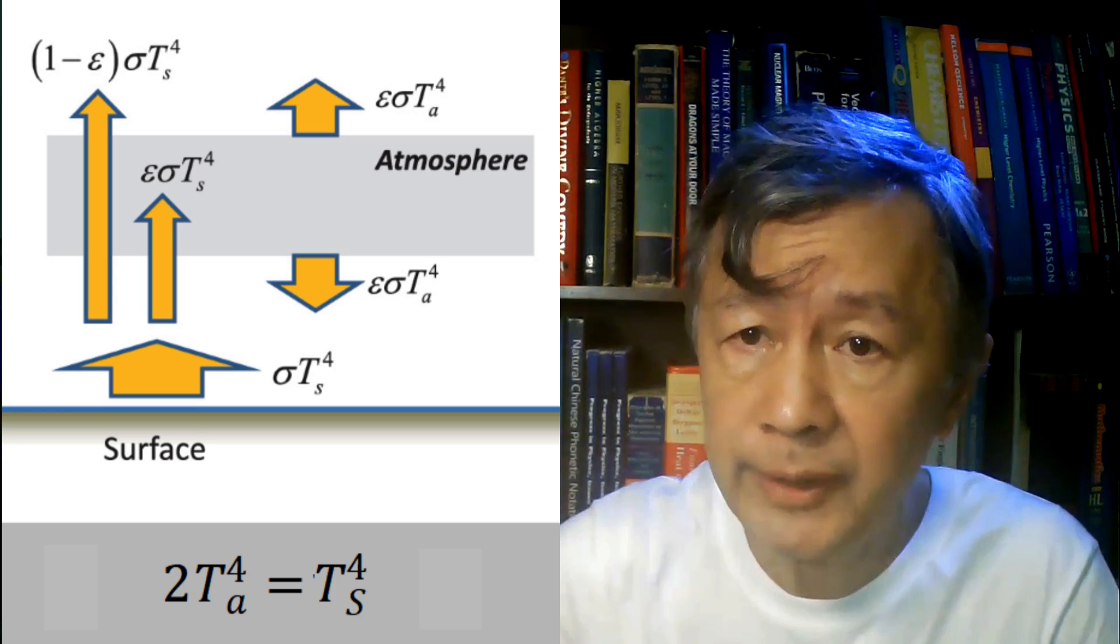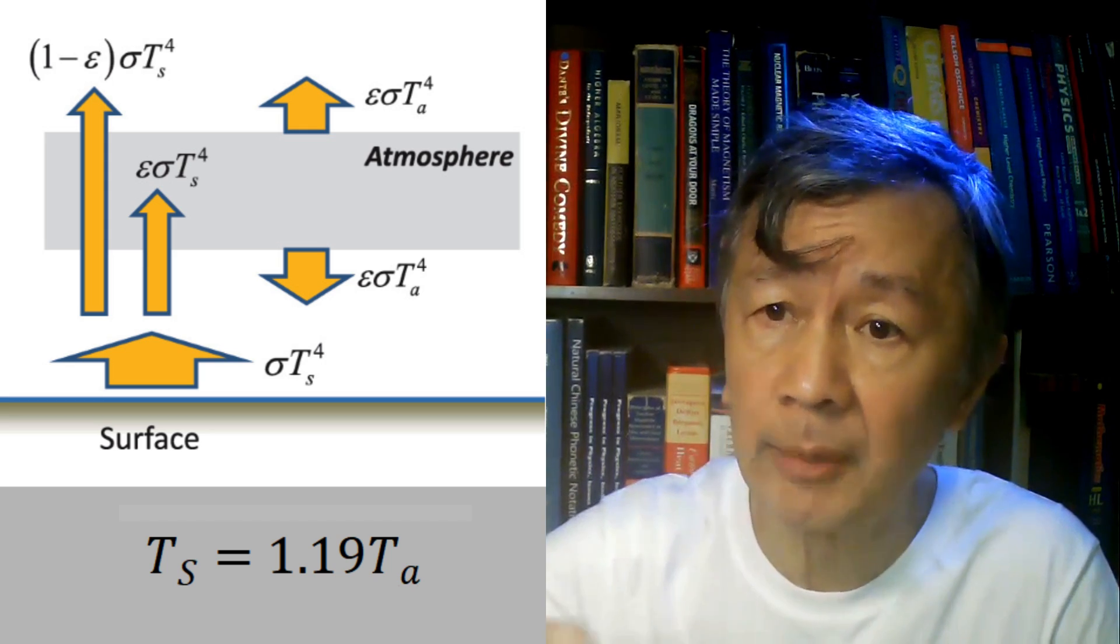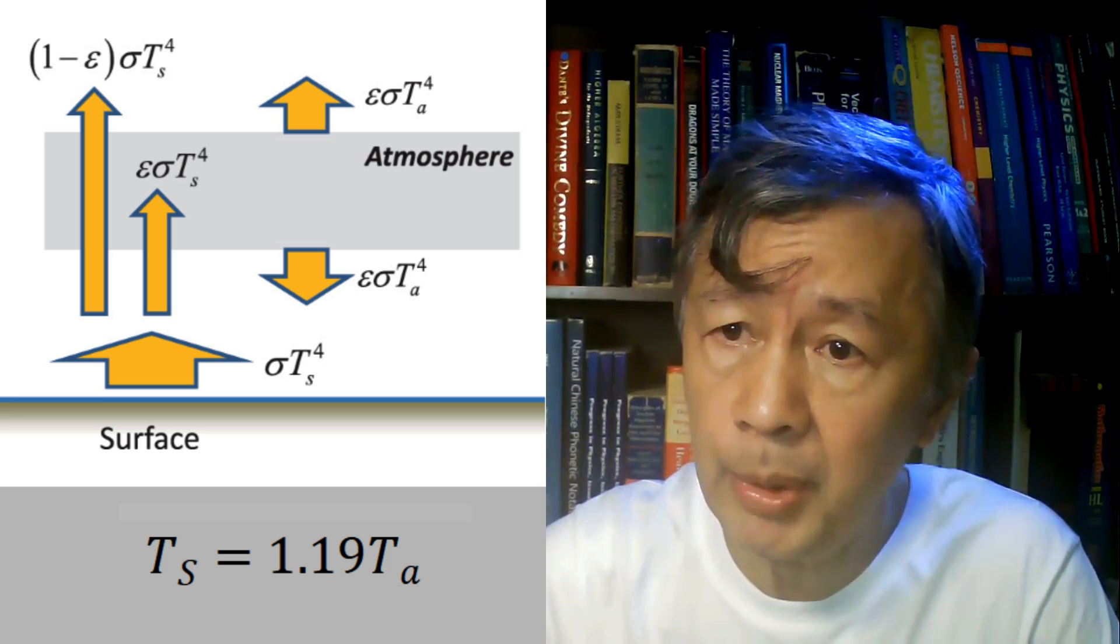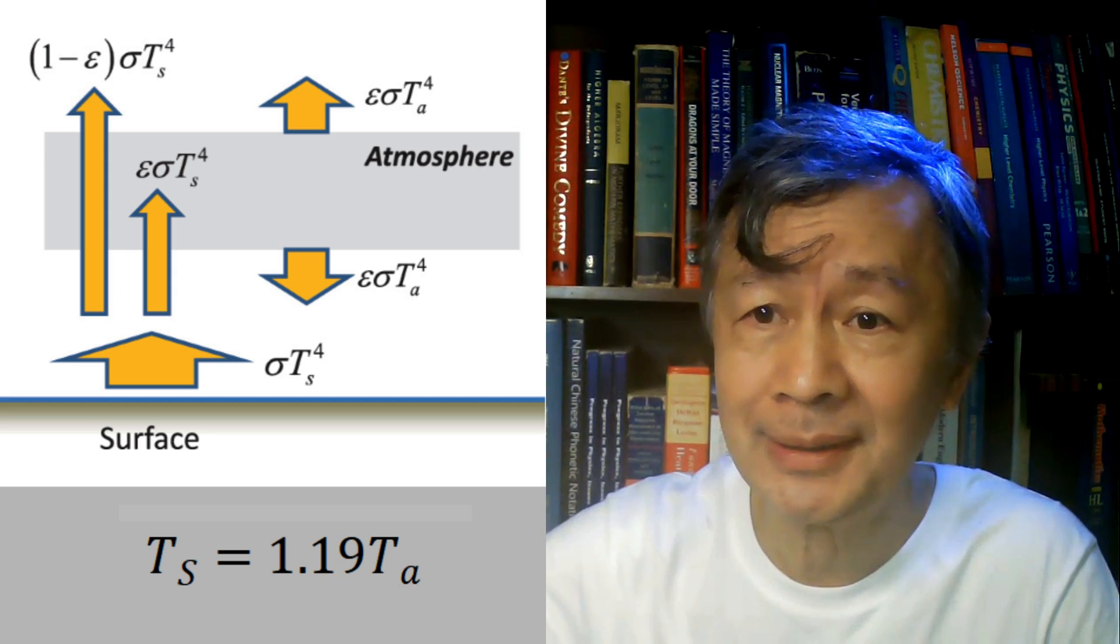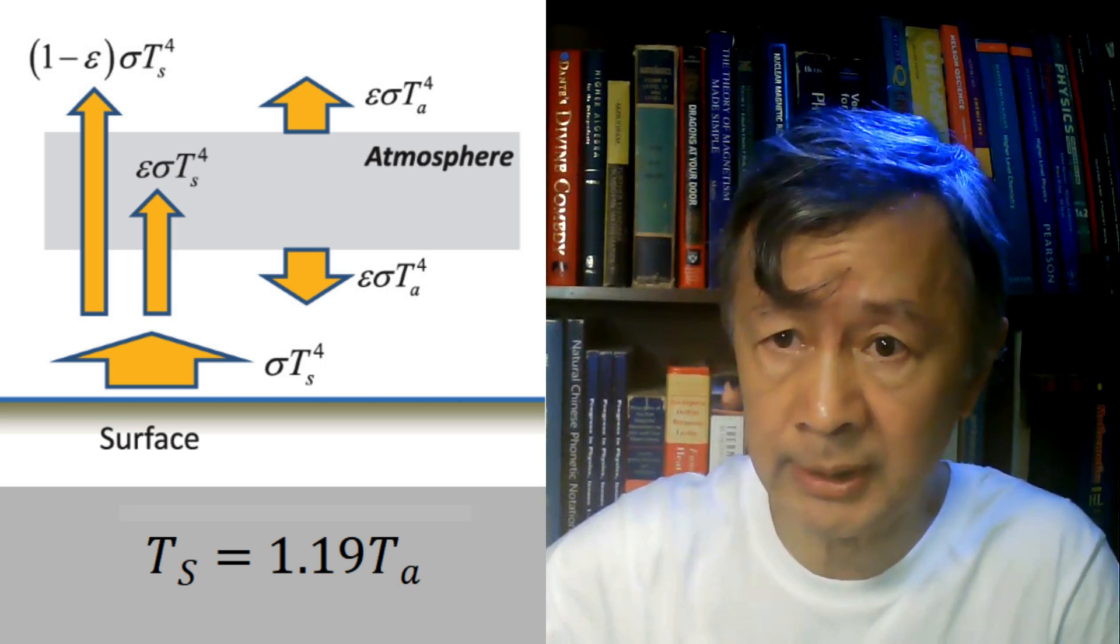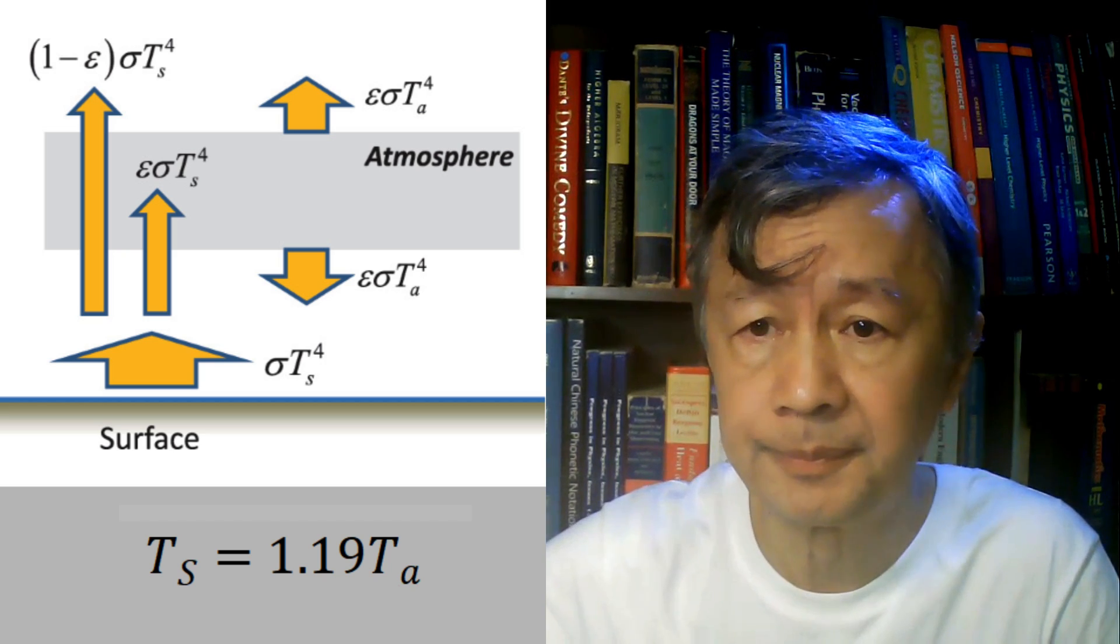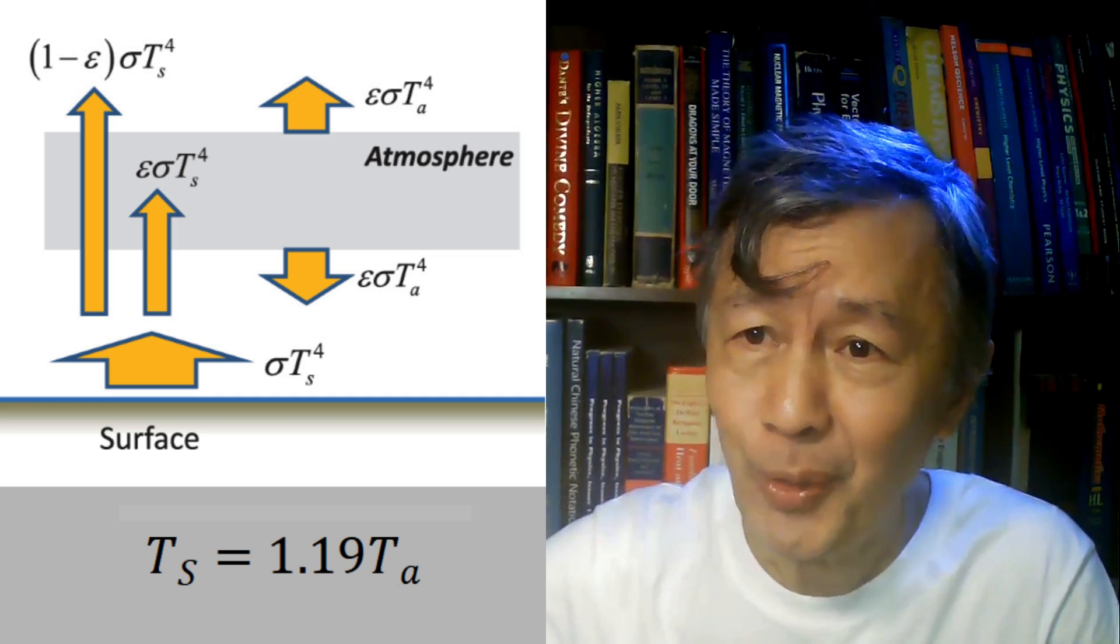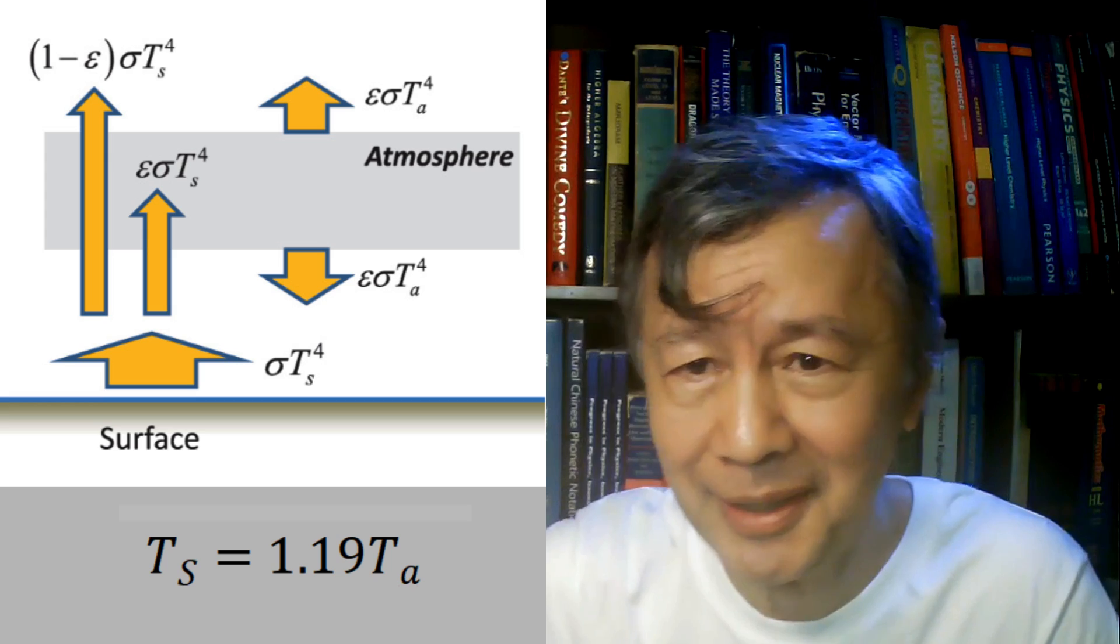Or by removing the fourth root, we got TS equal to 1.19 multiplied by T_a, which means the surface temperature is always 1.19 times warmer than the atmosphere, irrespective of how much infrared rays can be emitted or absorbed, because this equation is independent of the atmospheric emissivity. Sounds reasonable, but very strange, although one of my regular viewers seems to dream of such temperature difference. Am I right?